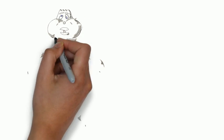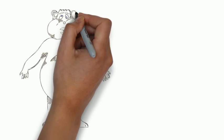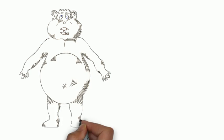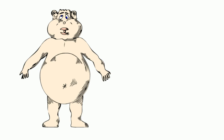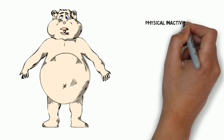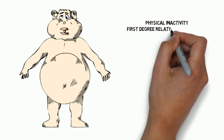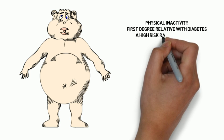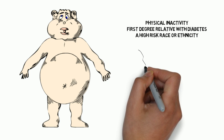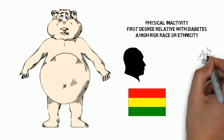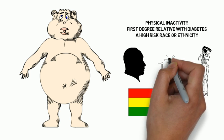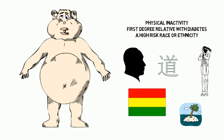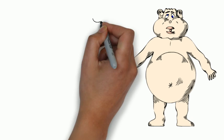Who should be tested for diabetes even though they may not have symptoms? Anyone who is overweight with a BMI greater than 25 and has one or more risk factors. Risk factors include physical inactivity, first-degree relative with diabetes, or a high-risk race or ethnicity — including African Americans, Latino, Native American, Asian American, and Pacific Islander.